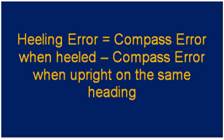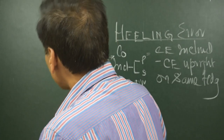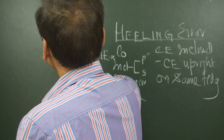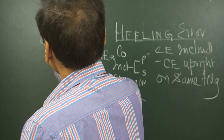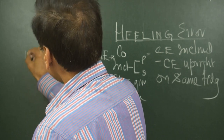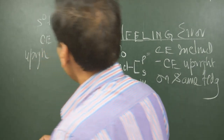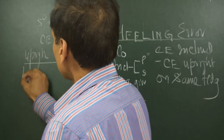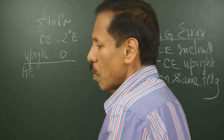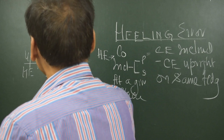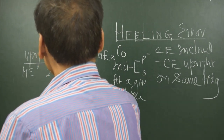We can understand the description of heeling error with a simple example. At a given place on a certain heading, while the vessel was inclined 5 degrees to port, the compass error was 2 degrees east, and when upright on the same heading the compass error was nil. So heeling error for that place, on that course, on that inclination is 2 degrees east minus 0, that is 2 degrees east.